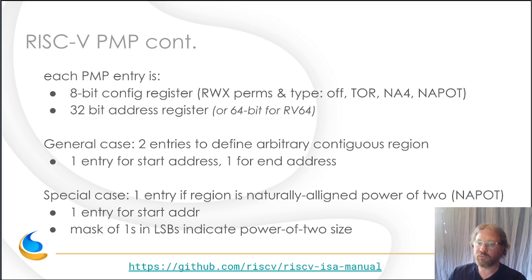For the general case, to protect an arbitrary contiguous memory region you need two PMP entries: one for the start address and one for the end address. With only a small number of PMP slots, we're limited in how many regions we can protect. However, if the region is a naturally aligned power of two, you only need one entry — the address register uses a mask in the least significant bits to indicate the size. So defining regions as naturally aligned power-of-two allows you to limit the number of PMP entries used.